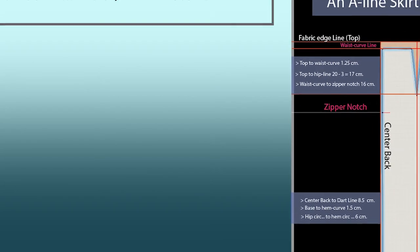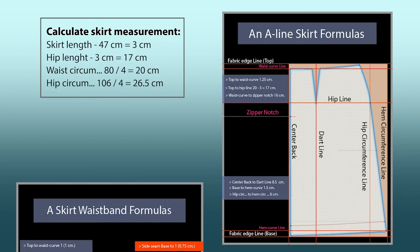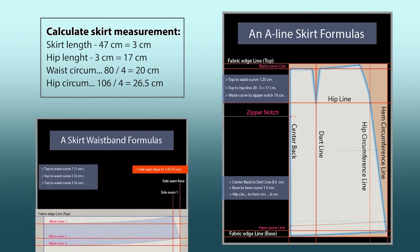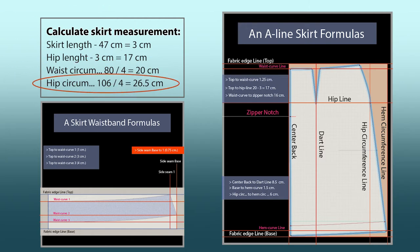After measuring, I'm going to show you how to calculate the skirt measurements. To calculate, I divide the waist circumference by four and the hip circumference by four. The waist circumference is 80, divided by 4 equals 20 centimeters. The hip circumference is 106, divided by 4 equals 26.5 centimeters.